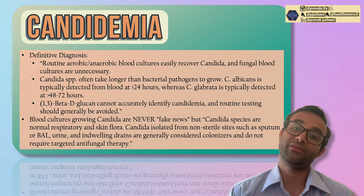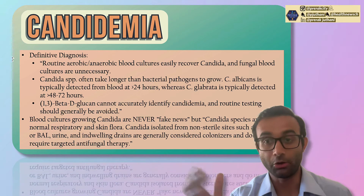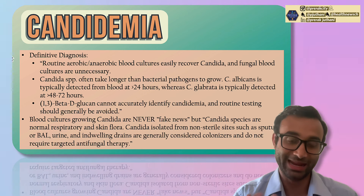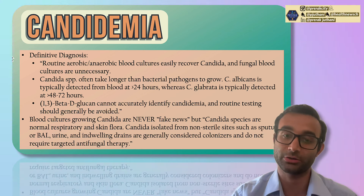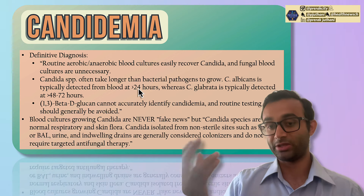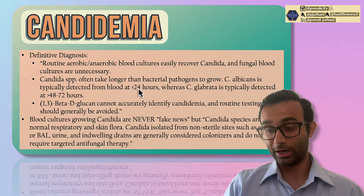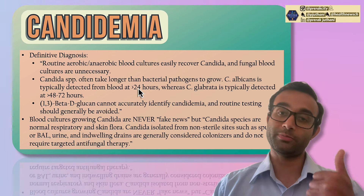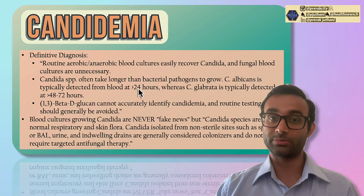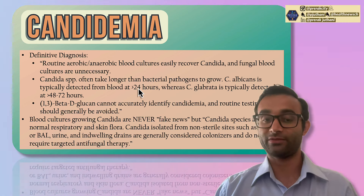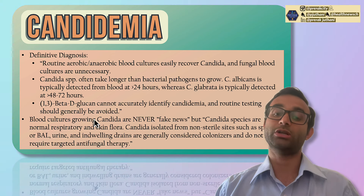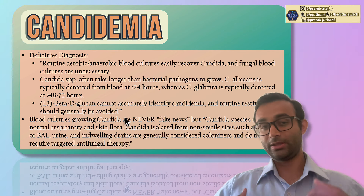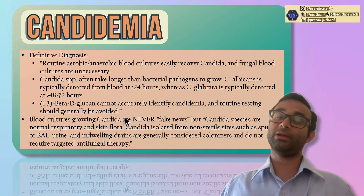The definitive diagnosis for candidemia is when blood cultures grow Candida. You often don't need fungal cultures. Candida species often take longer than bacterial pathogens to grow — you'll usually see growth within 24 hours, though glabrata takes a bit longer, 48 to 72 hours. You should think about Candida as a source of infection in anyone with a central line or who is severely immunosuppressed, as those individuals are very prone to fungal infections.